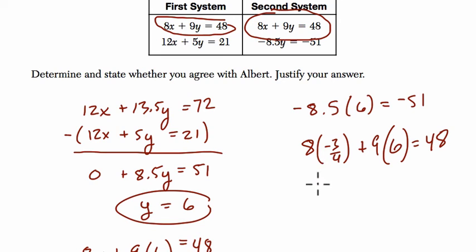So 8 times negative 3 fourths is negative 24 over 4, or negative 6. Plus 54, that does equal 48. It works.